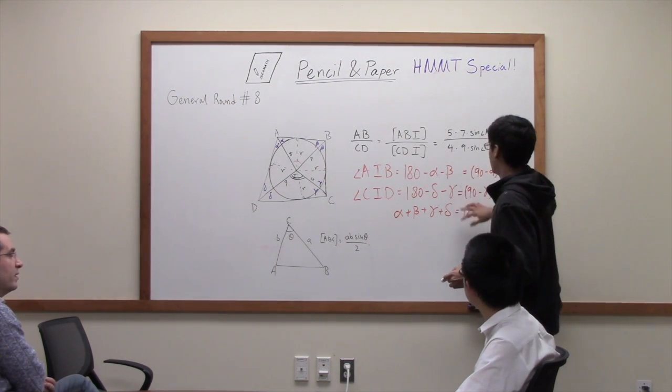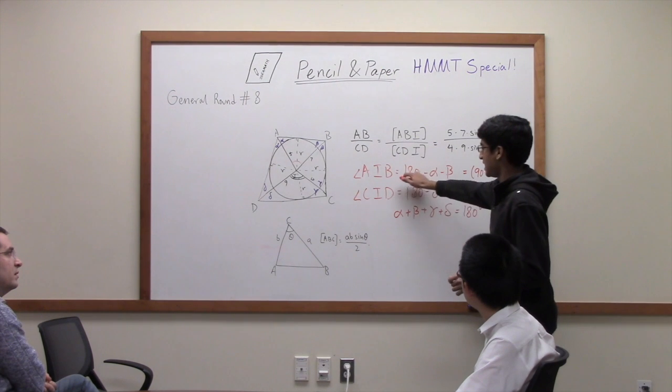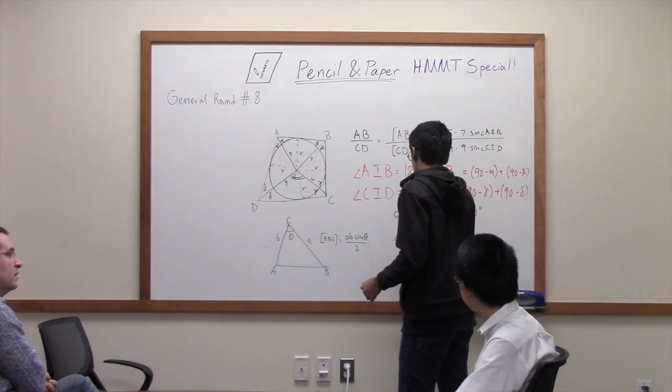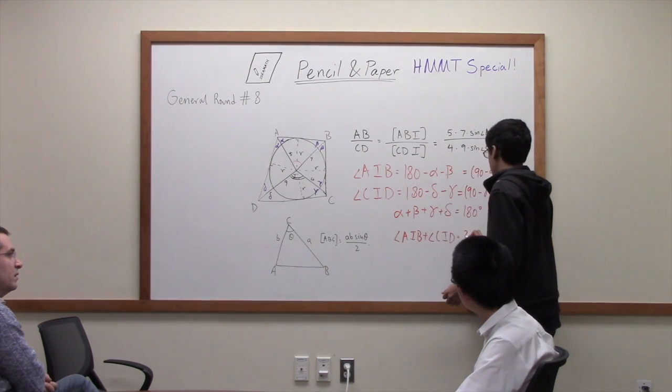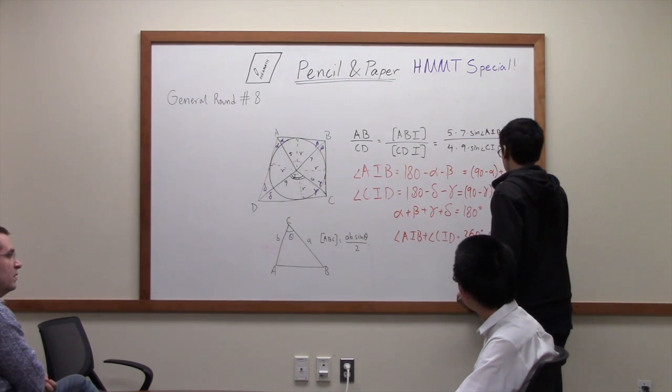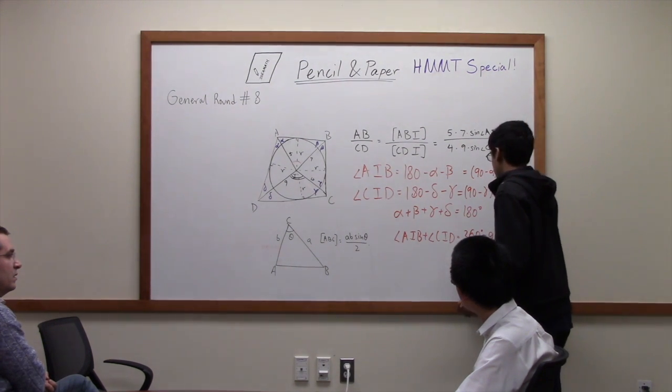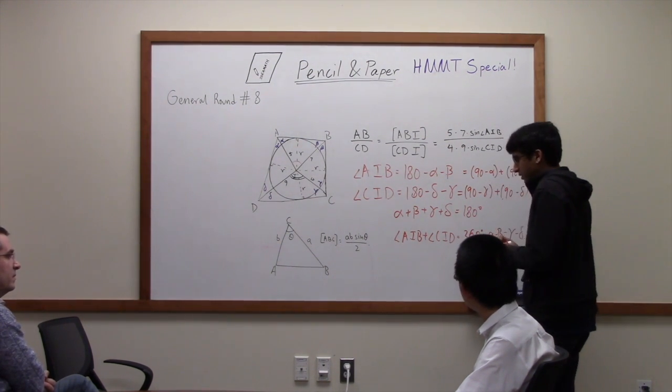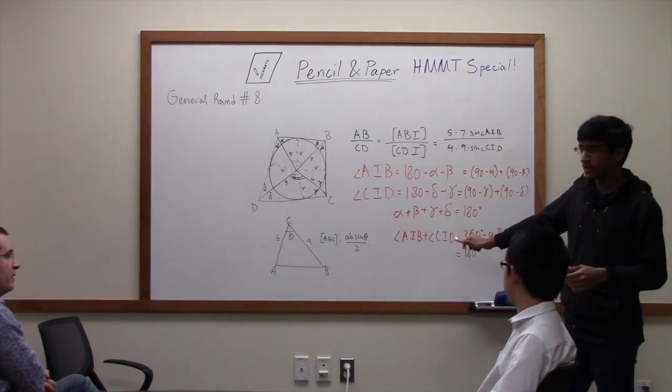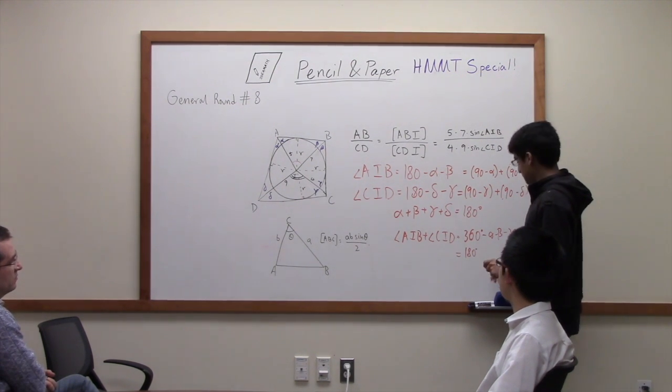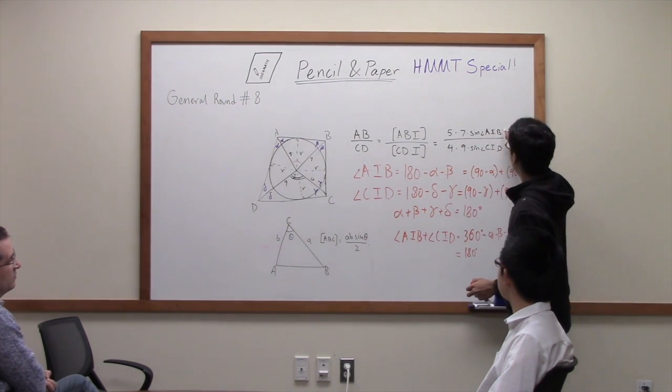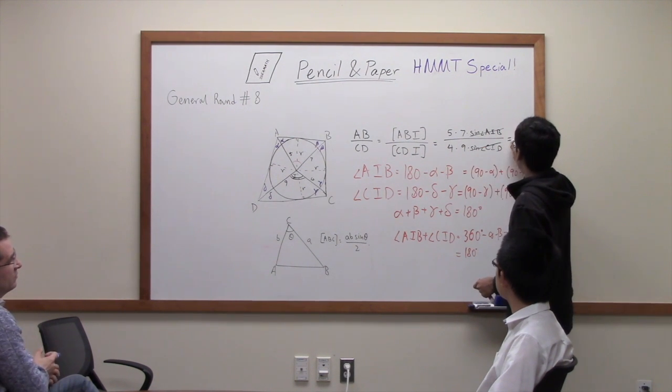So it doesn't really matter now which way we think of it, but we see that if we add AID to CID, we're going to get 360 minus alpha minus beta minus gamma minus delta, which is equal to 180. So another thing we know is that if you have two angles that add up to 180 degrees, their sines are the same. So that means that in this equation, sine AID is actually equal to sine CID. So the answer is 35 over 36.